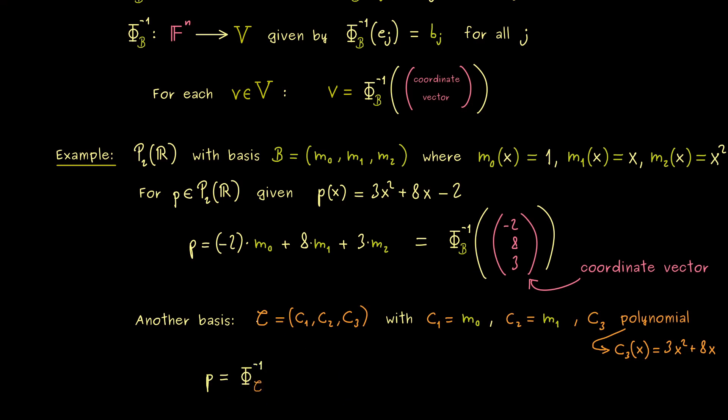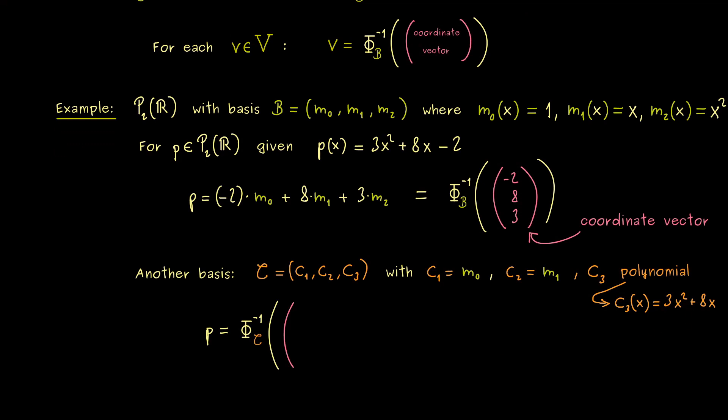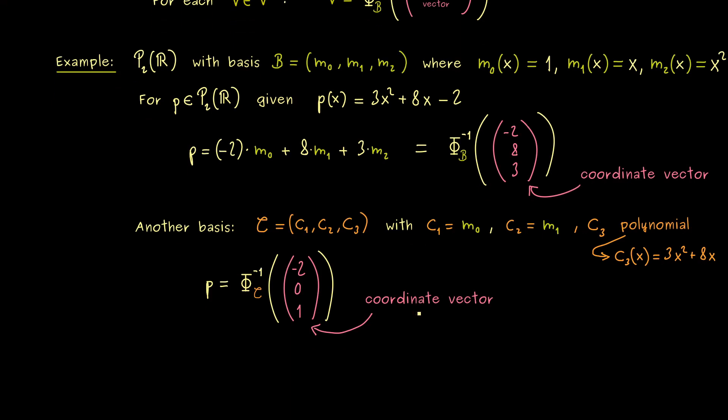Therefore also in this case we can write our p from before with a coordinate vector. However now with respect to our basis C. In fact you should see we can take c₃ one times. We don't need c₂ but we need minus 2 c₁. So this is the coordinate vector that represents the same polynomial as before. So you could say it looks a little bit simpler than before. But also the basis looks more complicated now. And with that you already see we could have completely different coordinate vectors representing the same p. And the change between these two is what we call the change of basis.